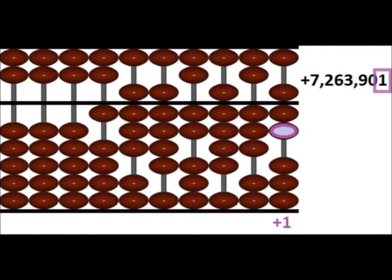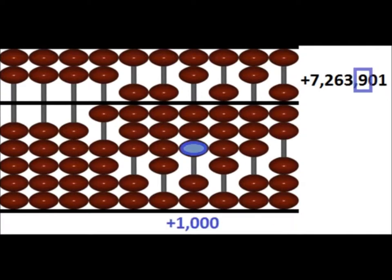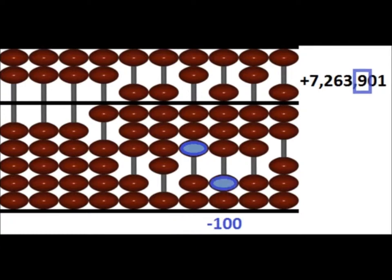We move on to the hundreds, since it is a number 0 for the tens. There isn't enough beads in the hundreds to add 9, so we push up 1 earth bead in the thousands, and then we push down 1 earth bead in the hundreds, which gives us 9.